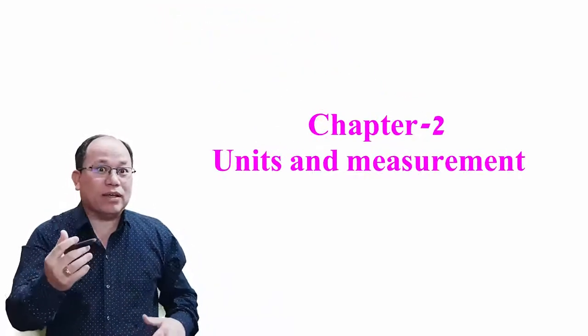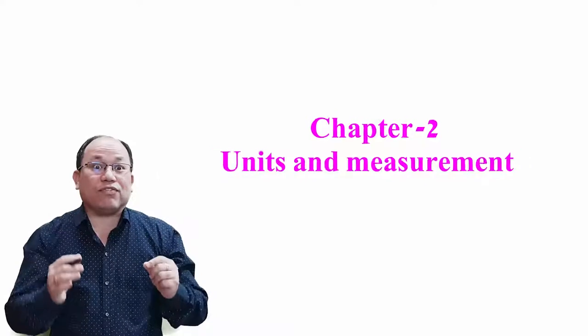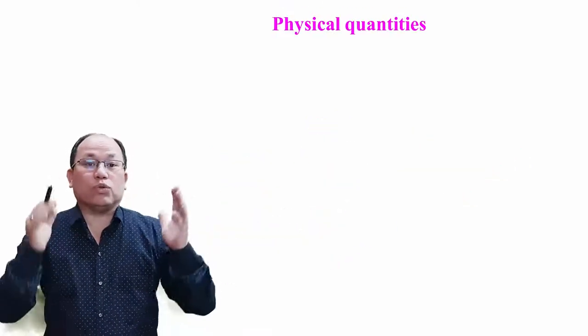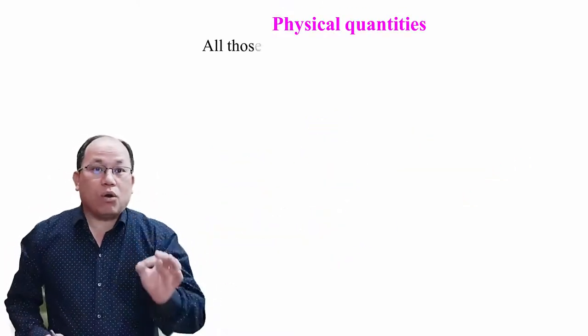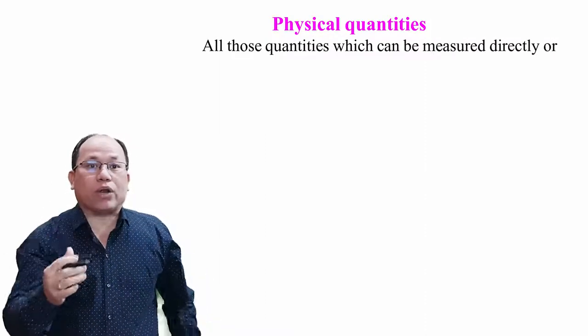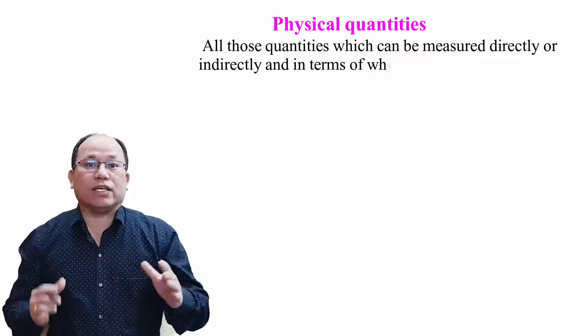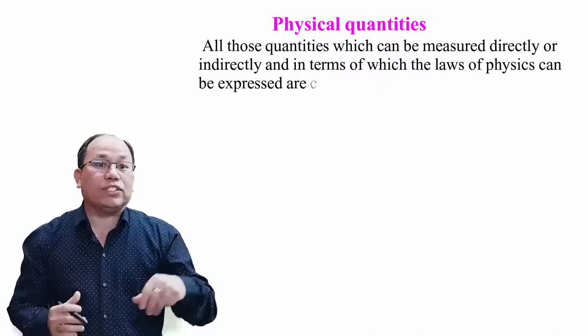Welcome, dear students. Let's come to the second chapter of this unit — Units and Measurement. First, let us define physical quantities. All those quantities which can be measured directly or indirectly, and in terms of which the laws of physics can be expressed, are called physical quantities.